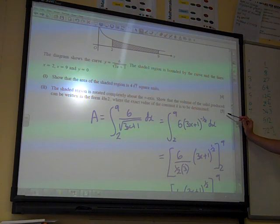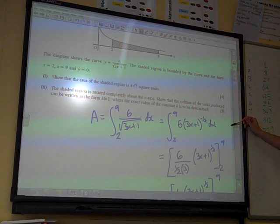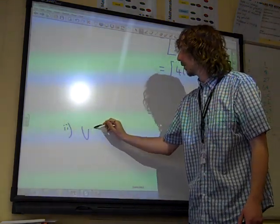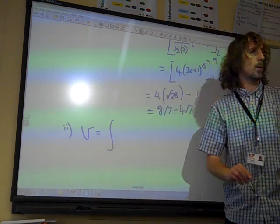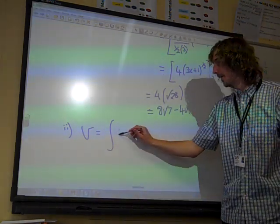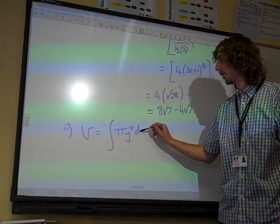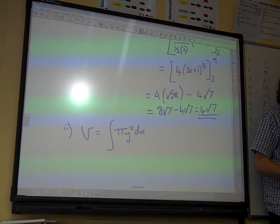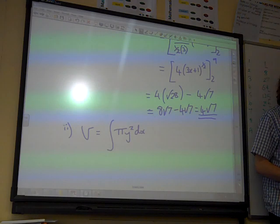Remember the volumes of revolution stuff? So, we've got the volume, it's the integral of pi y squared dx between the limits that we're dealing with. So, we need to know what y squared is.